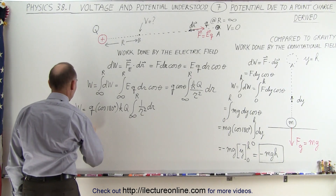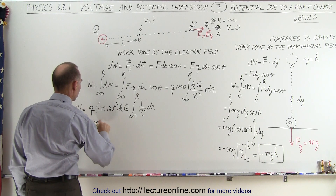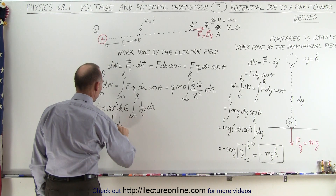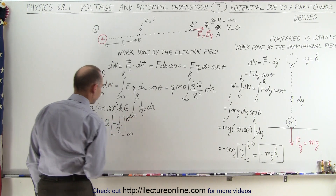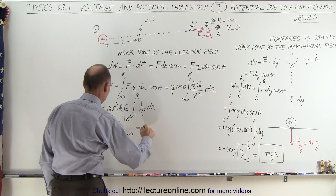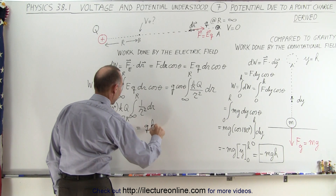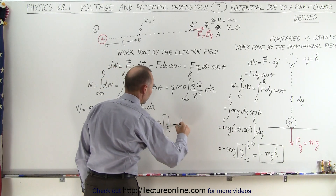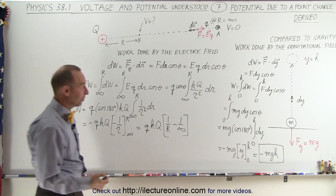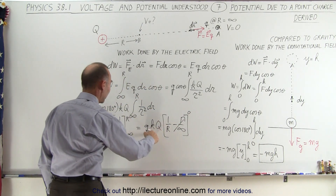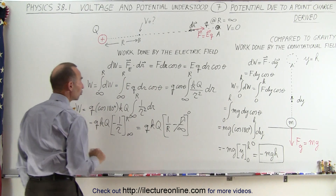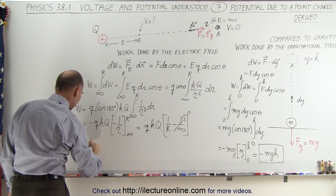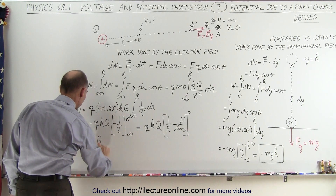Now we're ready to integrate. This equals minus qkQ — because cosine of 180 is minus 1 — times negative 1 over r, evaluated from infinity to r. The two negatives cancel, giving qkQ times the quantity 1 over r minus 1 over infinity. Since 1 over infinity equals 0, that term disappears, and the work done to move a charge from infinitely far away to a location at distance r from the source charge is equal to qkQ divided by r.